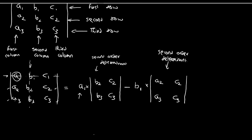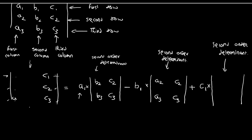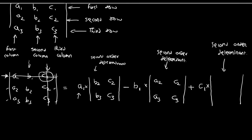Then we add the third element of the first row, which is C1, and multiply C1 with another second order determinant. Since C1 is in the first row and the third column, we exclude the first row and the third column, leaving elements A2, A3, B2, B3.